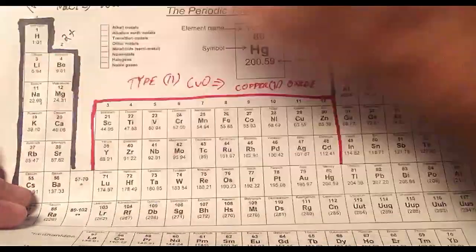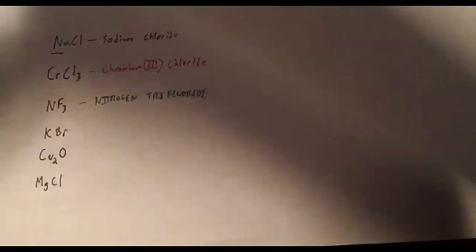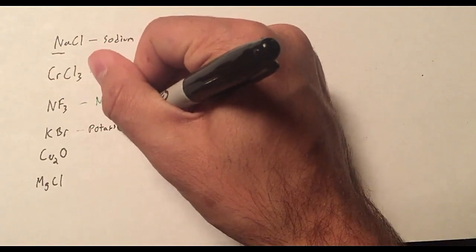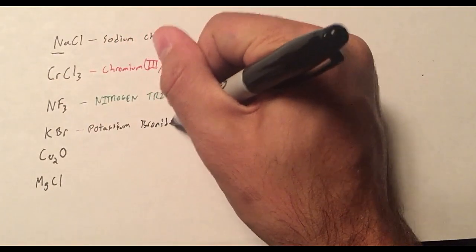There it is. I don't need to worry about anything at all. It's type none. So I just write the two compounds. Potassium bromide.